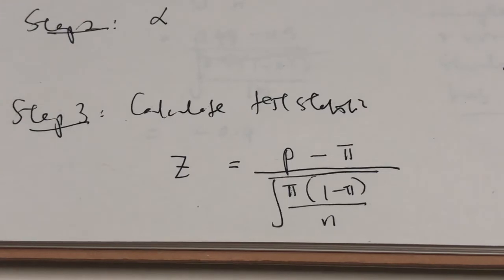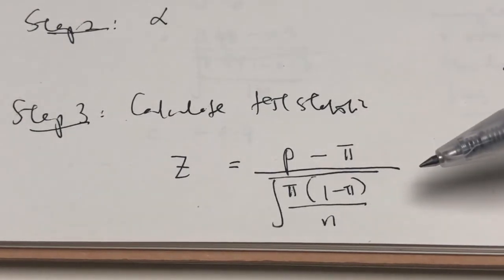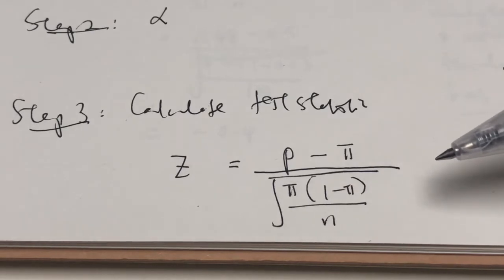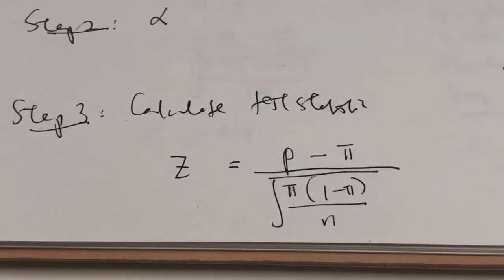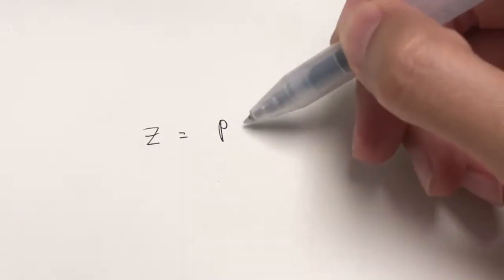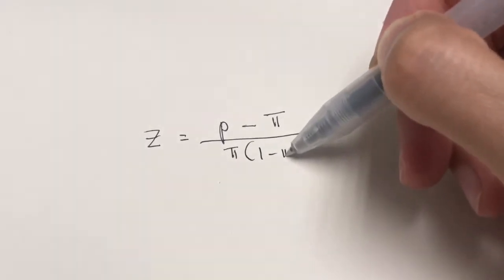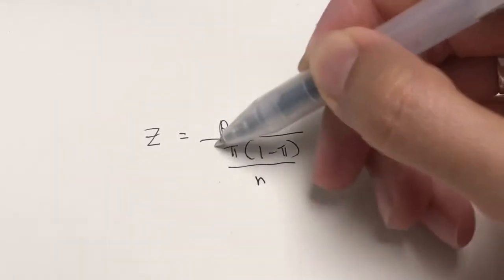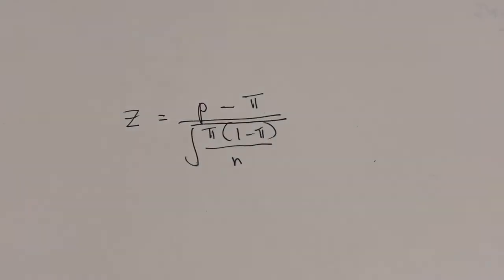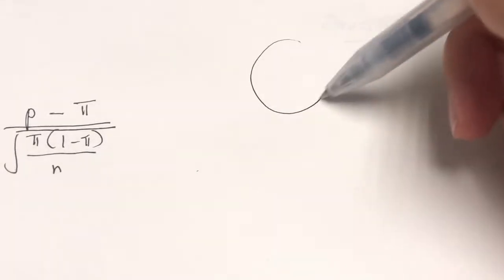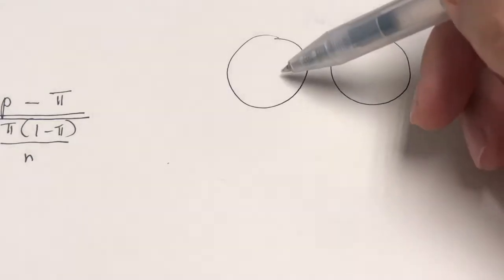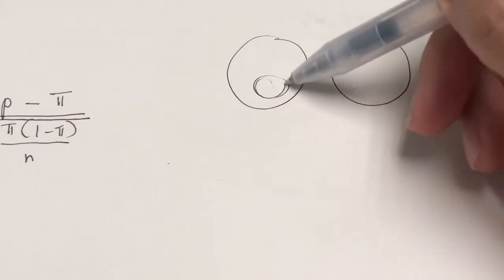Now, for a one population proportion test, this is how we calculate the test statistic. The formula is slightly different for a two population proportions test. For a one population proportion test, the formula is: sample proportion minus the population proportion, over the square root of pi times 1 minus pi over n. For a two population proportion test, it will be slightly different because since we have two populations, and from each population we took two samples, we have n1 and n2.